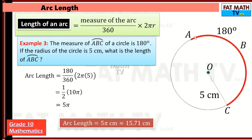Arc ABC has a length of 5π centimeters, or approximately 15.71 centimeters.